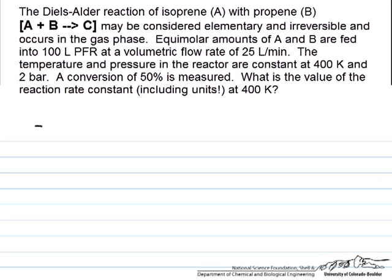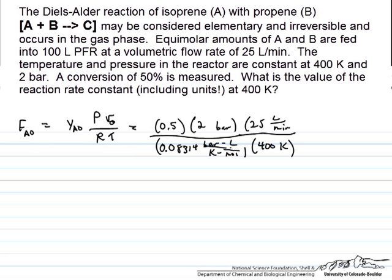The molar flow rate we can determine. This is at 2 bar, a reasonable pressure, so we can determine this molar flow rate in terms of the ideal gas law. It equals the mole fraction of A times the pressure times the volumetric flow rate over RT. We can solve for the molar flow rate of A entering the reactor, our FA0 value, as being equal to 0.75 moles per minute.